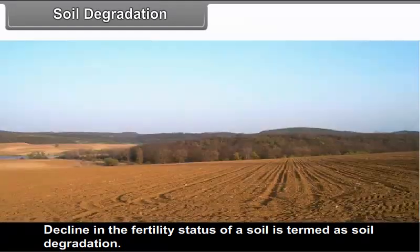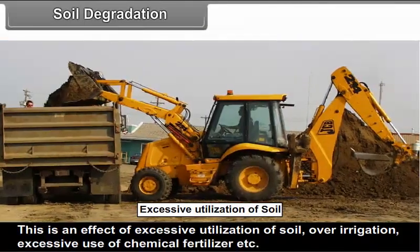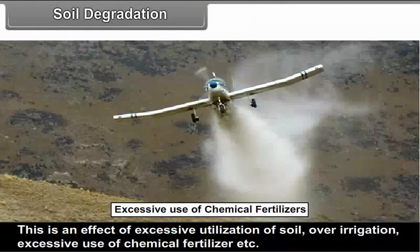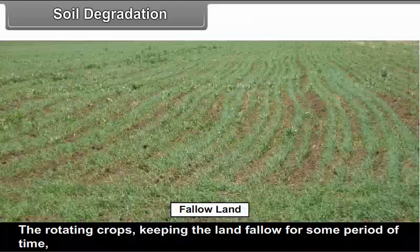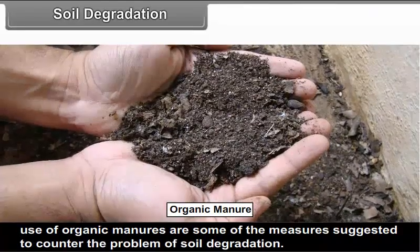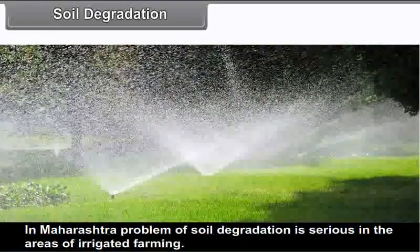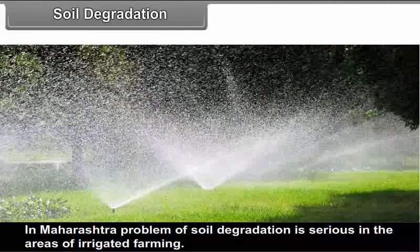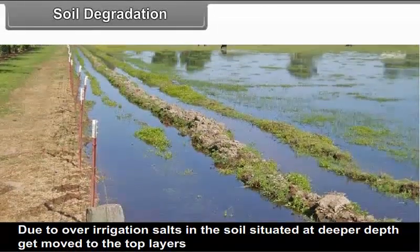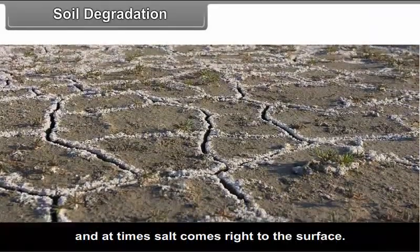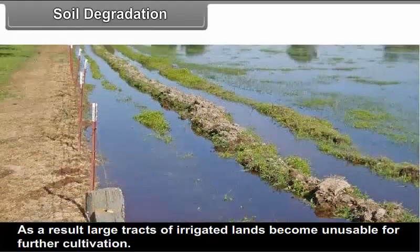Soil degradation: A decline in the fertility status of soil is termed soil degradation. This is an effect of excessive utilization of soils, over-irrigation and excessive use of chemicals and fertilizers. Rotating crops, keeping land fallow for some period, and using organic manures are measures to counter soil degradation. In Maharashtra, soil degradation is serious in areas of irrigated farming. Due to over-irrigation, salts from deeper depths move to the top layers and at times come right to the surface, making large tracts of irrigated land unusable for further cultivation.